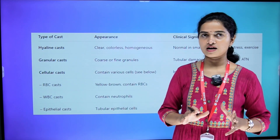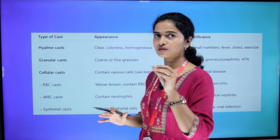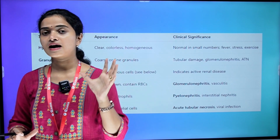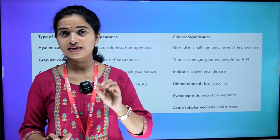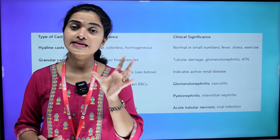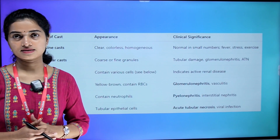First of all, types of cast. The cast has one appearance and one clinical significance — there is a chance to learn these in a tabular column format.